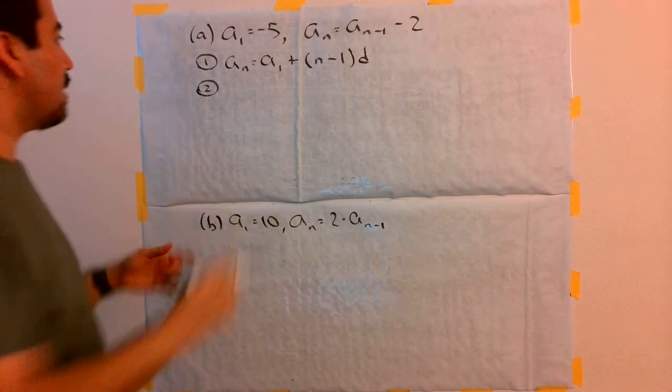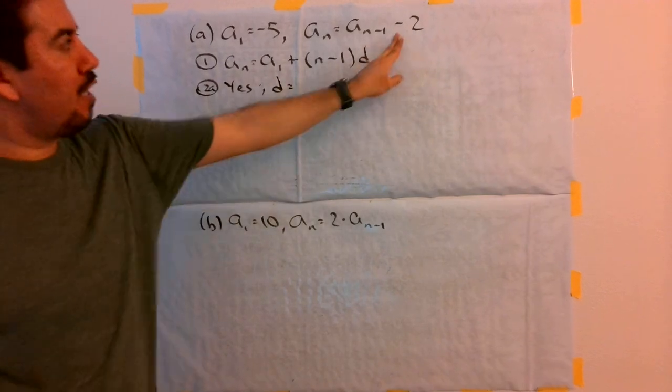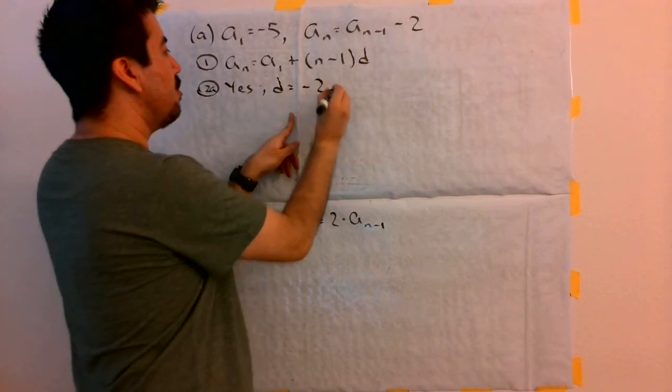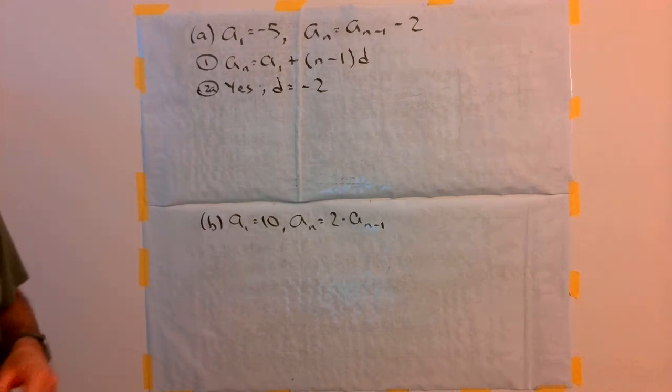There is a number negative 2 there. Well, if your answer is yes, and it is in this case for 2a, we get a common difference of whatever that value is. In this case, it's negative 2.